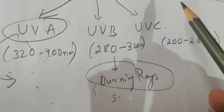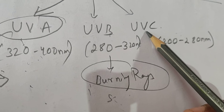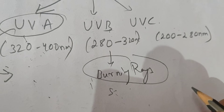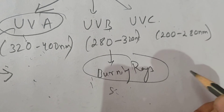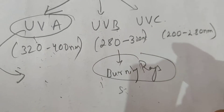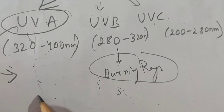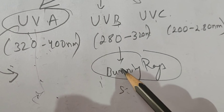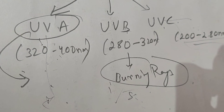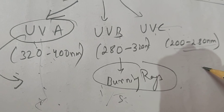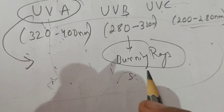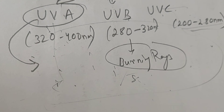UVC radiation is filtered by the stratospheric ozone layer. UVC is the highest-energy radiation but does not reach us. UVA is most reachable to us, and UVB is the middle category, falling on us and producing burning sensations. These UV radiations fall on our skin and produce various skin changes.